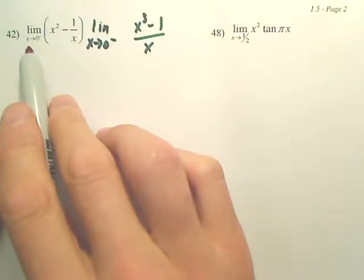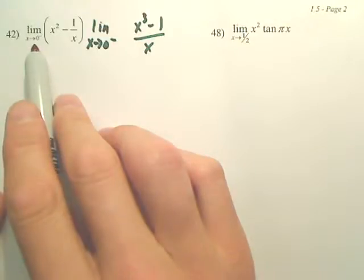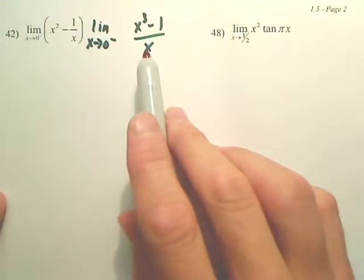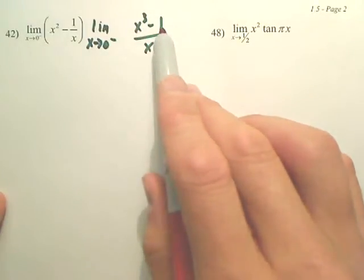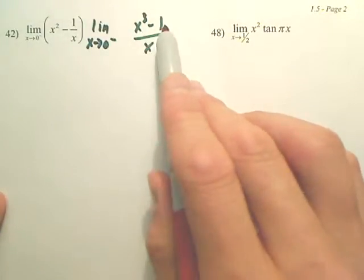Now, if I want to limit as x approaches zero, just in general, does it exist? No. Because you get zero on the bottom and you get negative one on top.